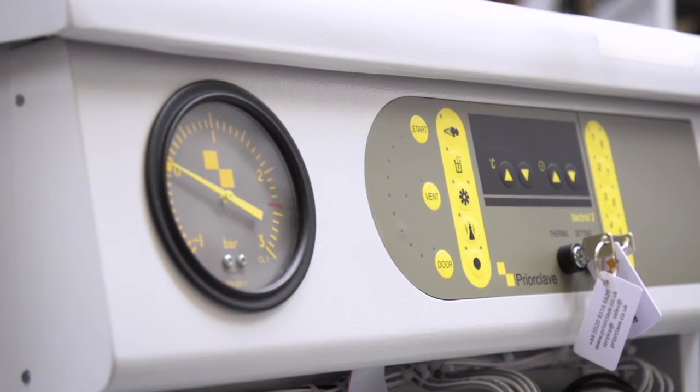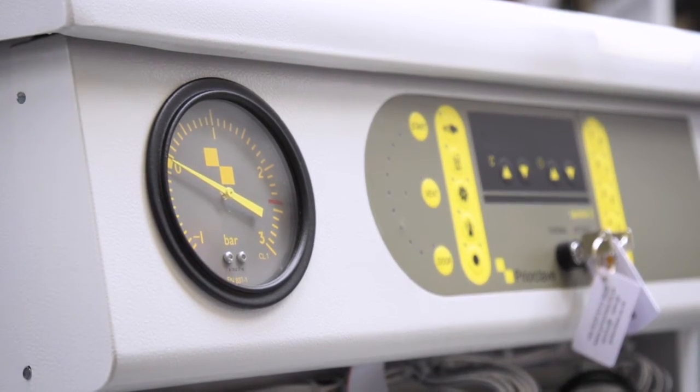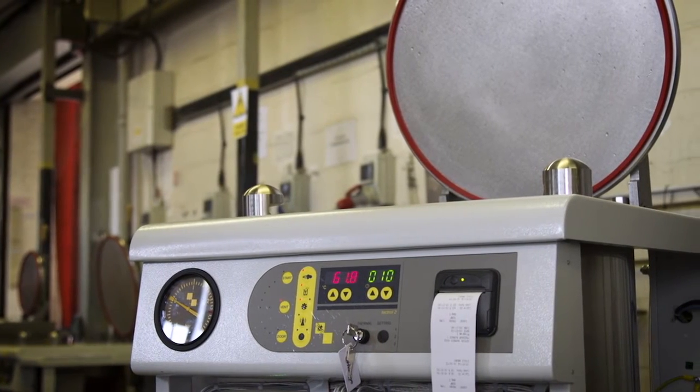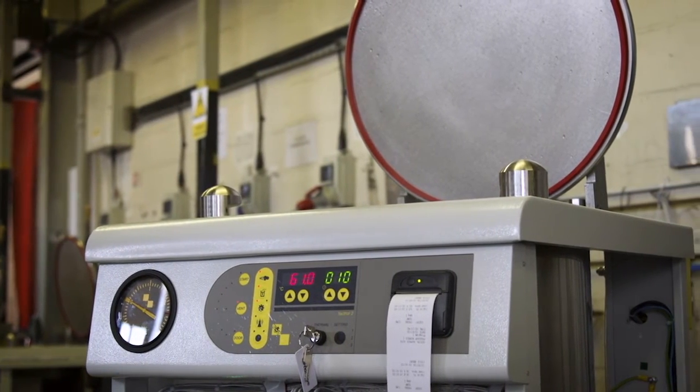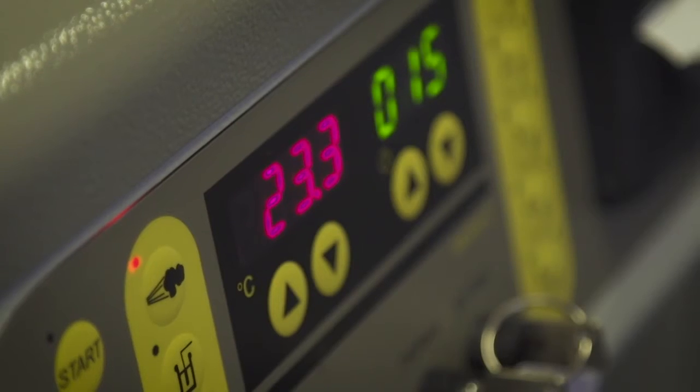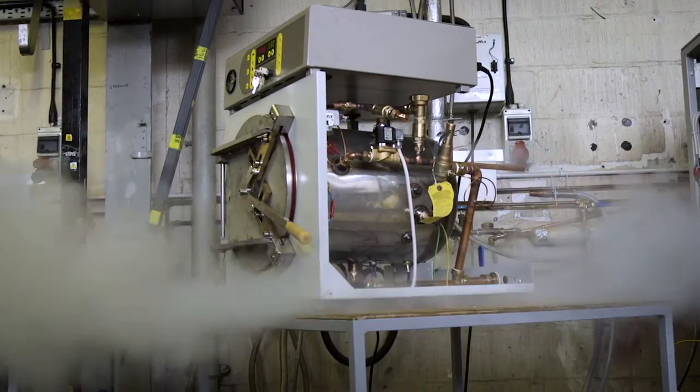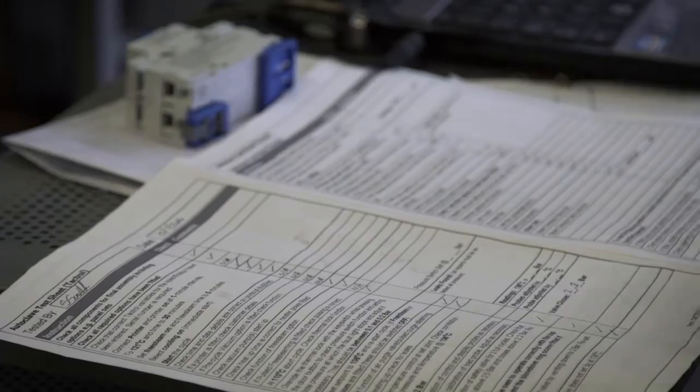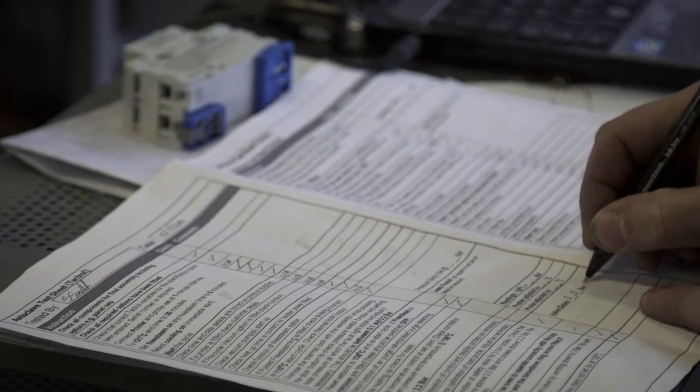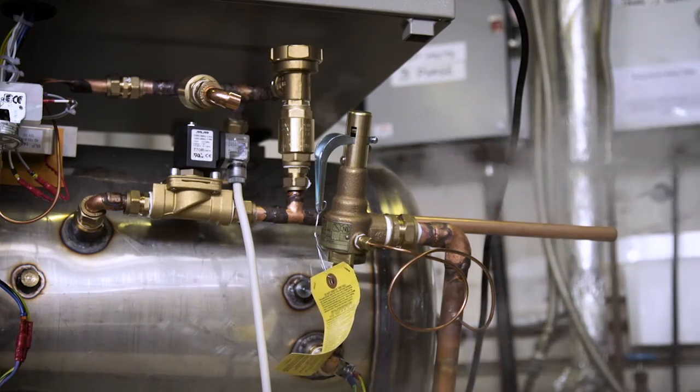Now they fit the control panel. This allows the autoclave operator to set up the autoclave for the many different sterilizing cycles that it's designed for. Once the autoclave has been fully assembled, it's given a full operational test. The autoclave is run and its function and safety tested against an extended checklist. Where different options have been ordered, these are also tested.